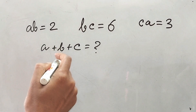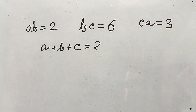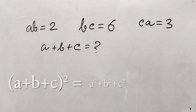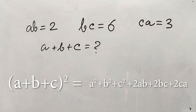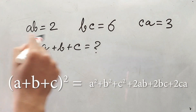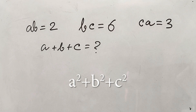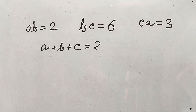Seeing this, immediately your mind will go to A plus B plus C whole square. What is the value of that? It is A squared plus B squared plus C squared plus 2AB plus 2BC plus 2CA, because we have got AB, BC, CA. But we don't have the value of A squared, B squared, and C squared separately. That's why this formula will not work here.